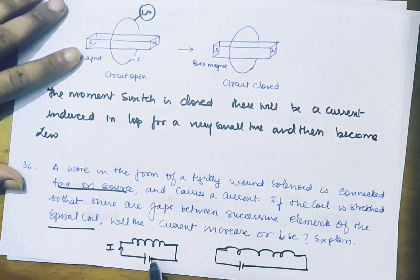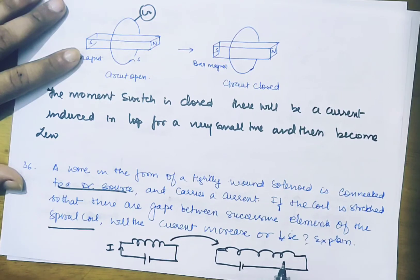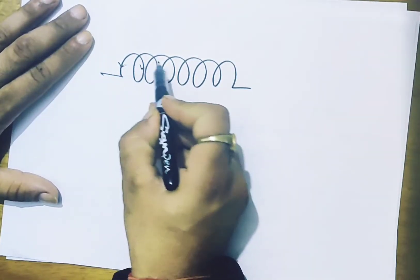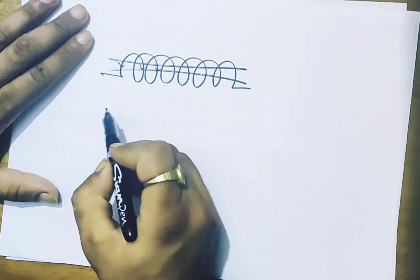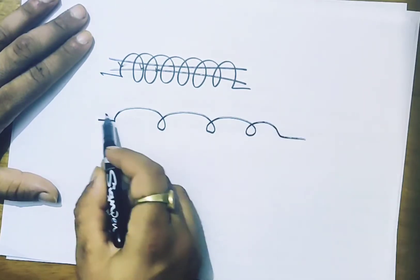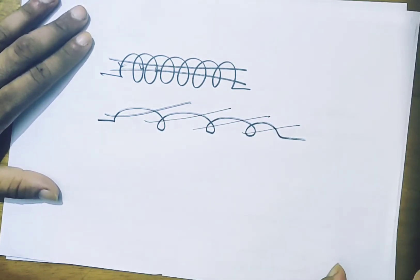We have to see whether the current in the circuit will increase or decrease. This is a coil — if you create gaps in it, the flux will leak from those gaps. So the flux will leak and the flux will decrease.